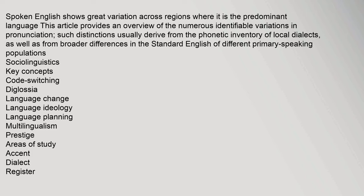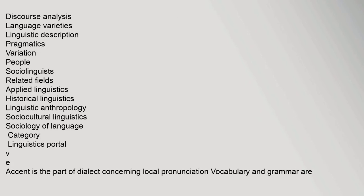Spoken English shows great variation across regions where it is the predominant language. This article provides an overview of the numerous identifiable variations in pronunciation. Such distinctions usually derive from the phonetic inventory of local dialects, as well as from broader differences in the standard English of different primary speaking populations. Key sociolinguistic concepts include code switching, diglossia, language change, language ideology, language planning, multilingualism, and prestige.